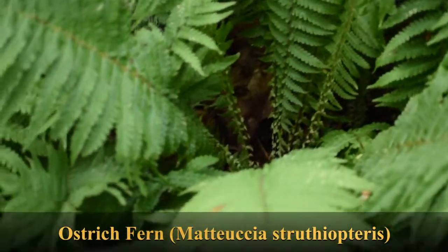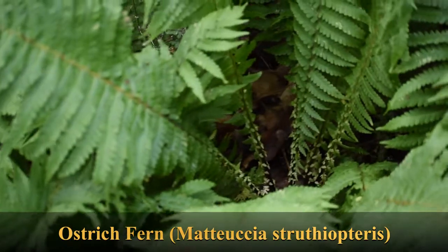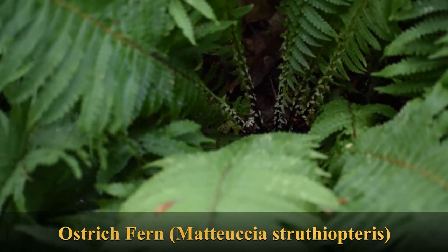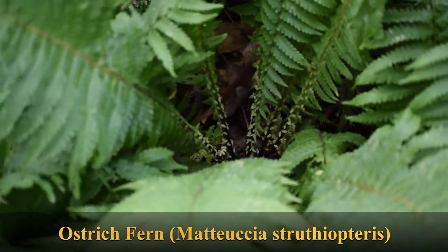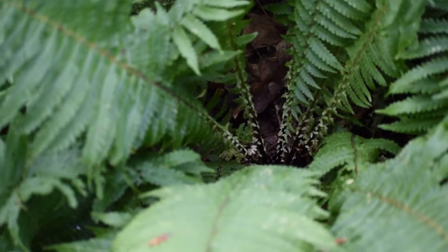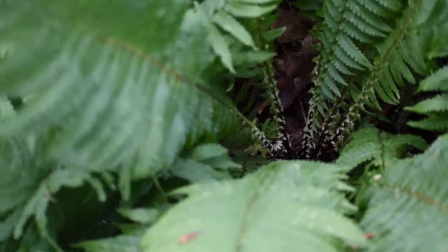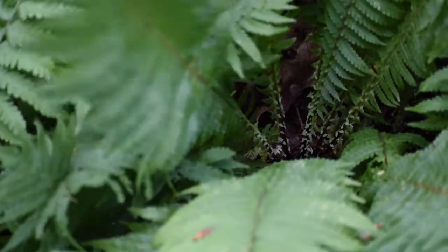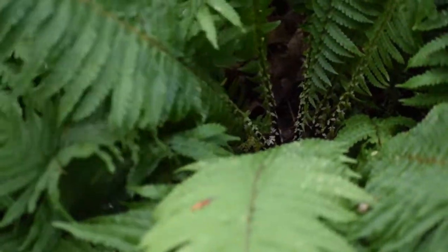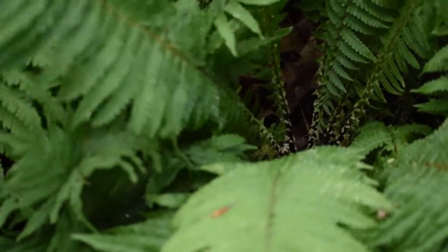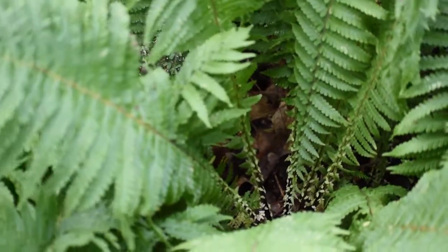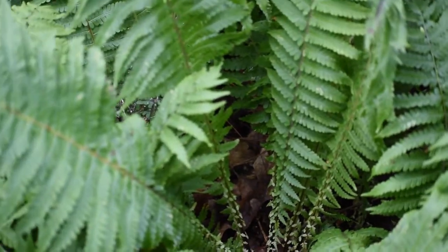This fern here is ostrich fern. You can see there, down at the little crown of the fern, where all the fronds emerge. You can recognize ostrich fern by the proximity of the little fern fronds — you see them very close together, not much space at all between them.